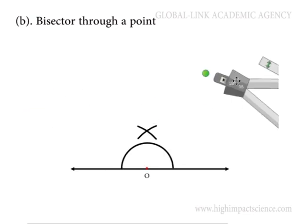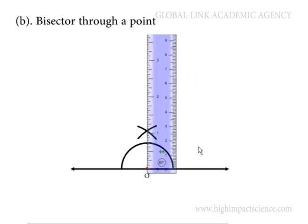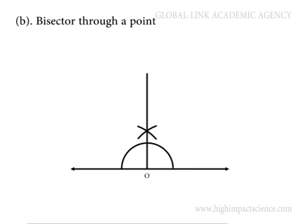Now put the compass aside and using a ruler join our point to the intersection of the two arcs. And basically what we have done is draw a perpendicular through point O.